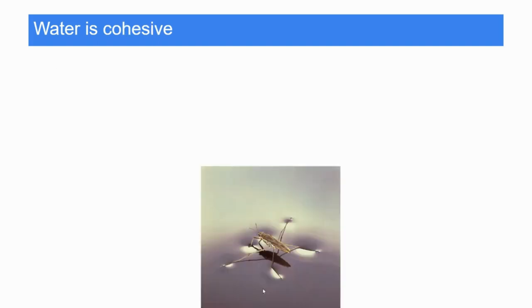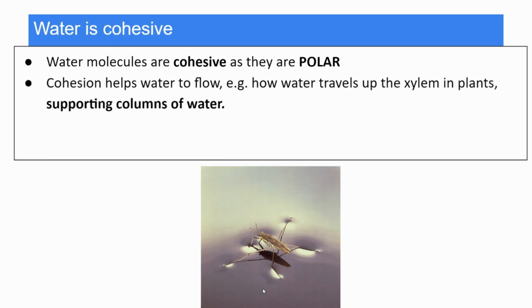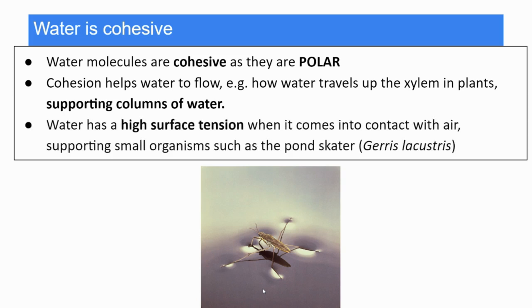Water is also cohesive, which is important for both plants and animals. Water molecules are polar, so they're sticking together, cohesive. Cohesion helps water to flow. In plants, that's how water travels up the xylem, supporting columns of water. Water has a high surface tension when it comes into contact with the air, so it supports small organisms such as the pond skater in this example, Geris lucustris.